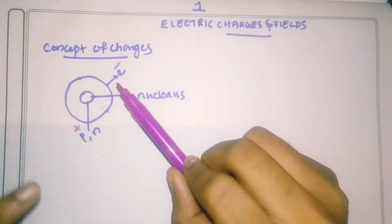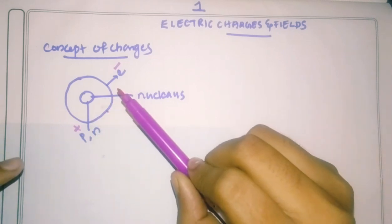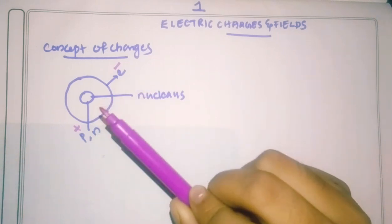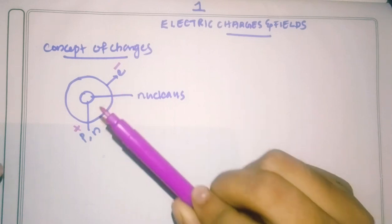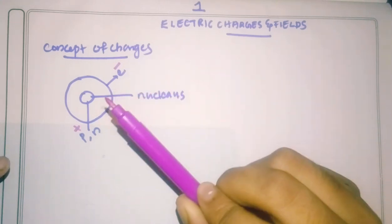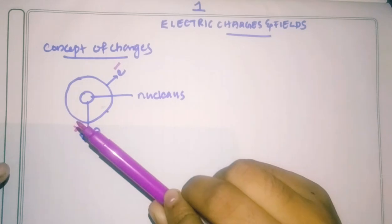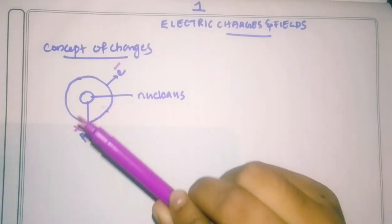You can see the electron and proton. The electron is negatively charged, and the proton is positively charged.